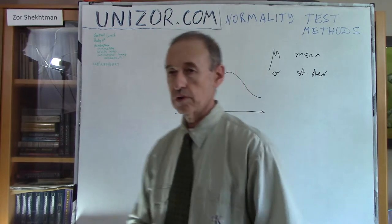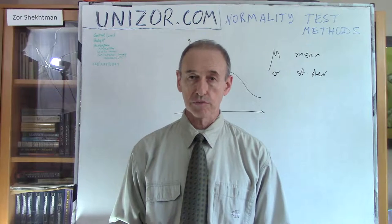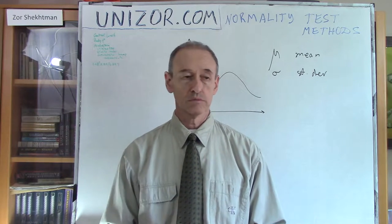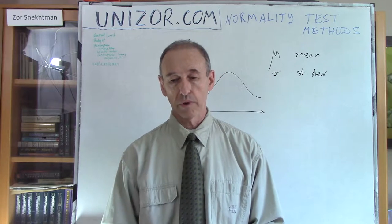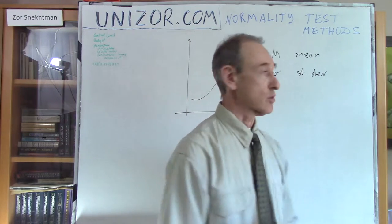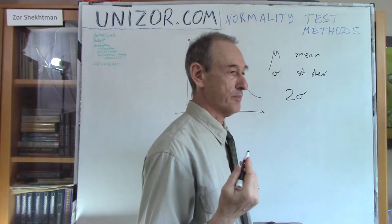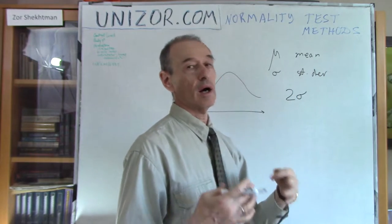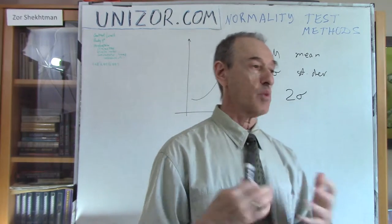Knowing these two values from our empirical data, we can recreate the entire distribution and find the probability of our random variable to be within any kind of boundaries — which is basically what distribution is all about. It's very important for distribution to be normal in statistical research because it's easier to deal with. We always know all these nice rules, like the two sigma rule for normal distribution, which means that the probability of a random variable being within two sigma boundaries from its mean is 95%, or 0.95.